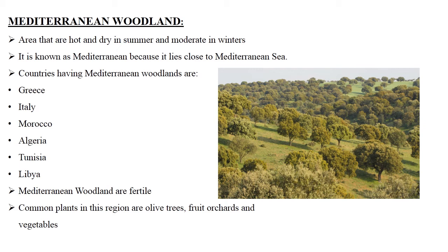Mediterranean woodlands are fertile. Olive trees, fruit orchards, and vegetables are common plants of this region.